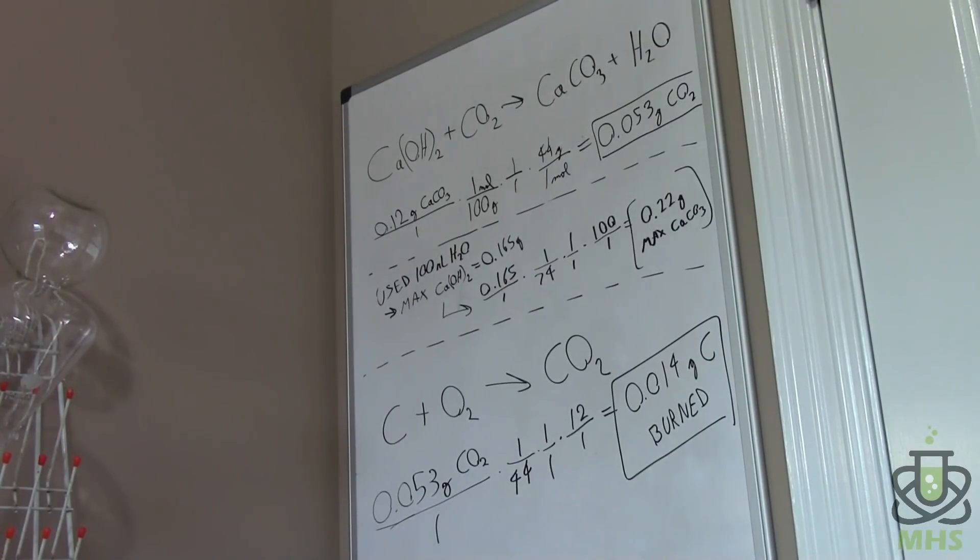Now if we take that back to the burning diamond reaction, that's the one on the bottom. Carbon plus oxygen gives us CO2. So our 0.053 grams of CO2 ends up at 0.014 grams of carbon that was burned. So that is a tiny amount.